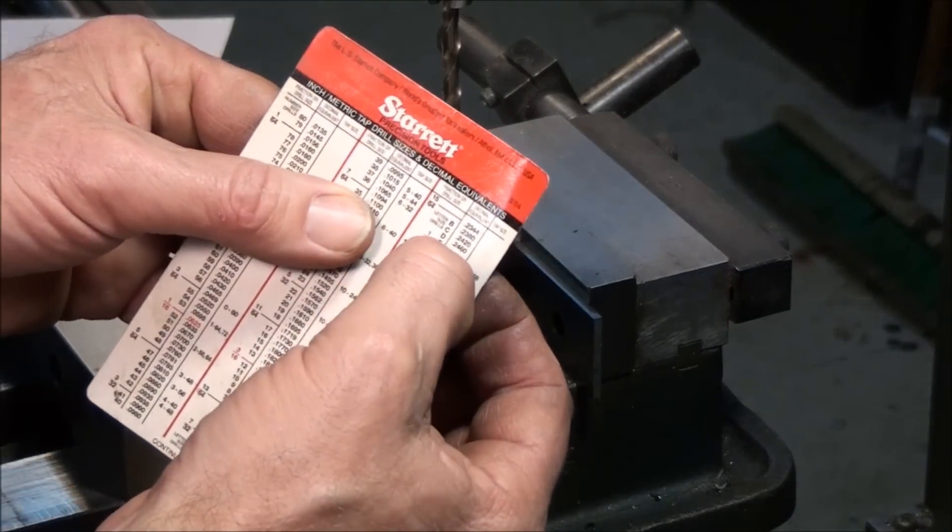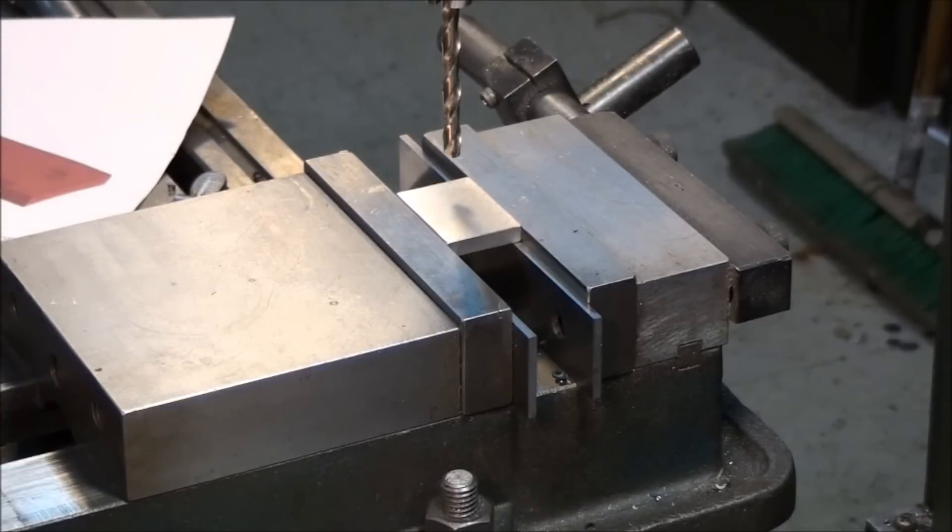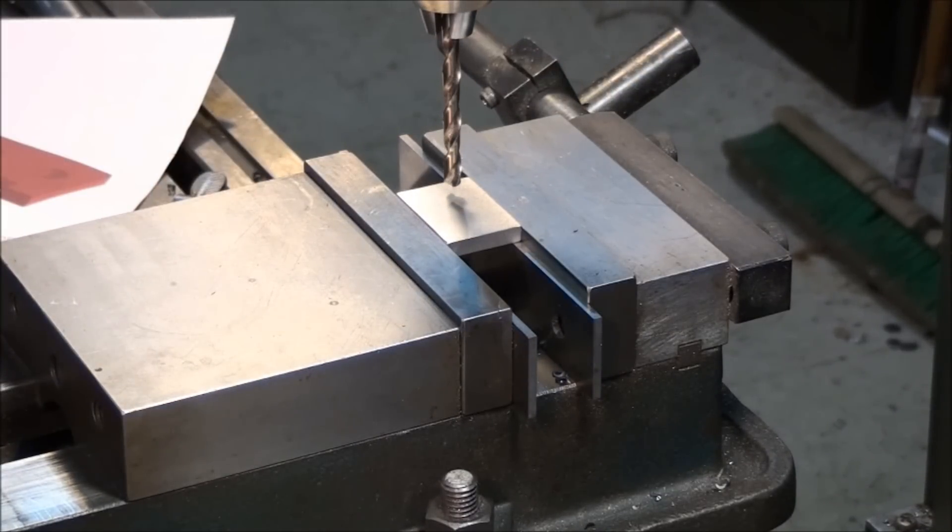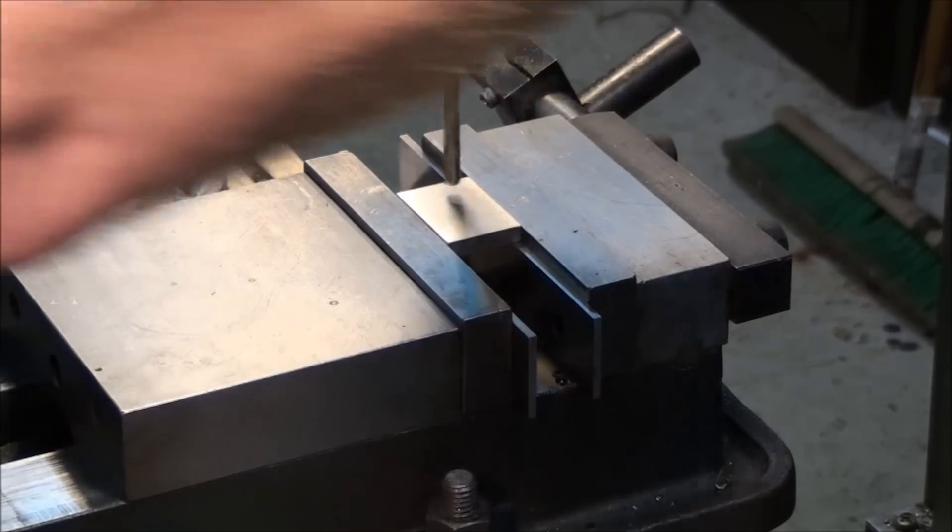You can get by with a quarter inch, which is 0.250. It's going to give you a little more thread, so it might be a little harder to get the tap through, but I happen to have a letter F on hand, so that's the one I'm going to use.